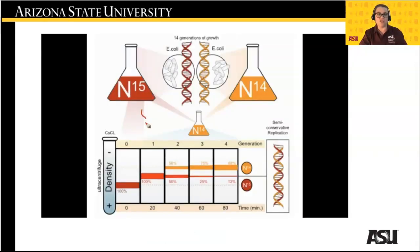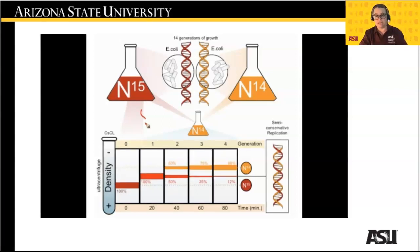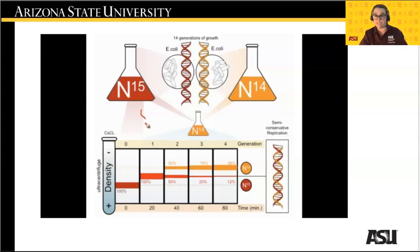Meselson and Stahl showed that by growing E. coli in heavy nitrogen, or N15 media, then allowing them to replicate on light nitrogen, or N14 media, the replications changed over 14 generations from heavy to lighter and lighter, until they were showing all daughter strands using only N14, and the original parent strands still with the N15. This provided the evidence needed to confirm the semi-conservative model of DNA replication.